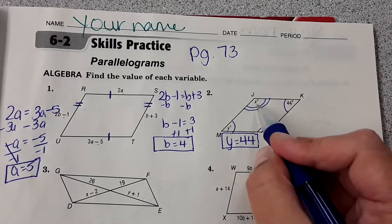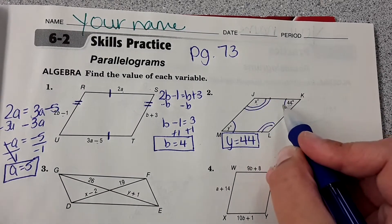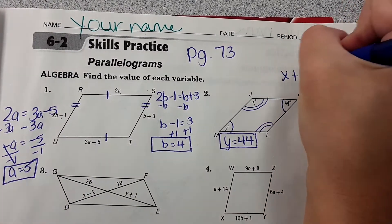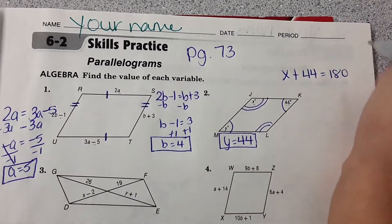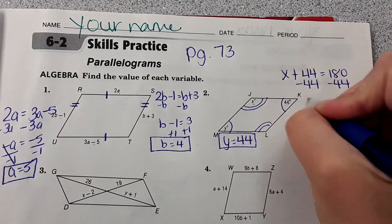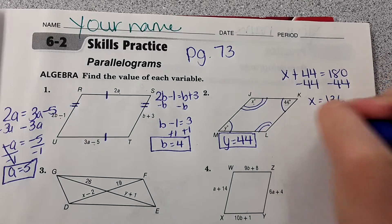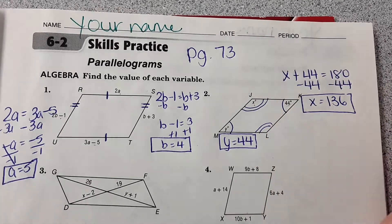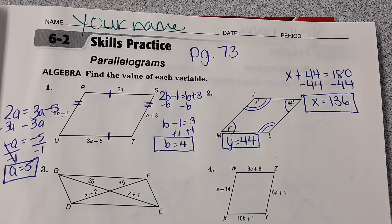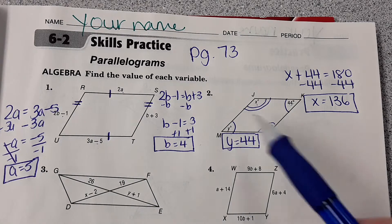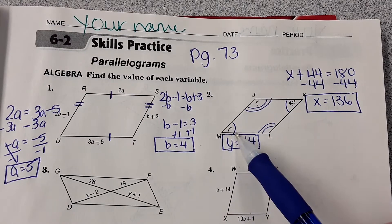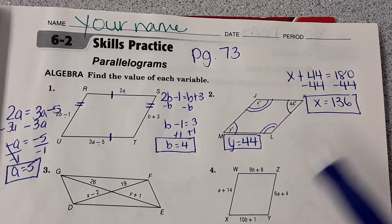Then to find x, our consecutive angles are supplementary, so x plus 44 equals 180, and now we can solve for x. X is also supplementary to this angle, so if you wanted to do 180 minus this 44, obviously you would have gotten the same thing.